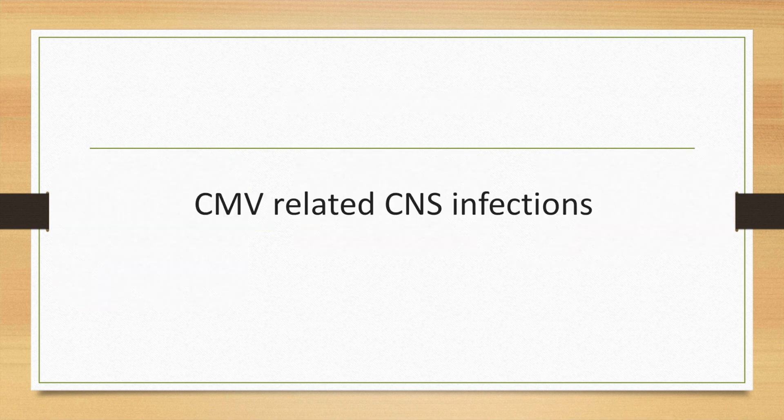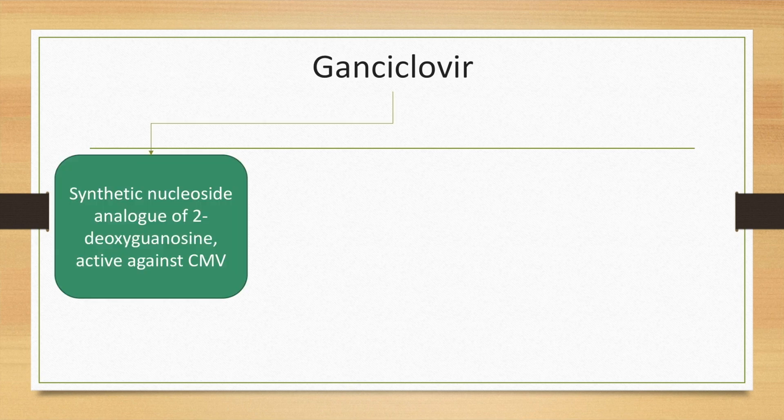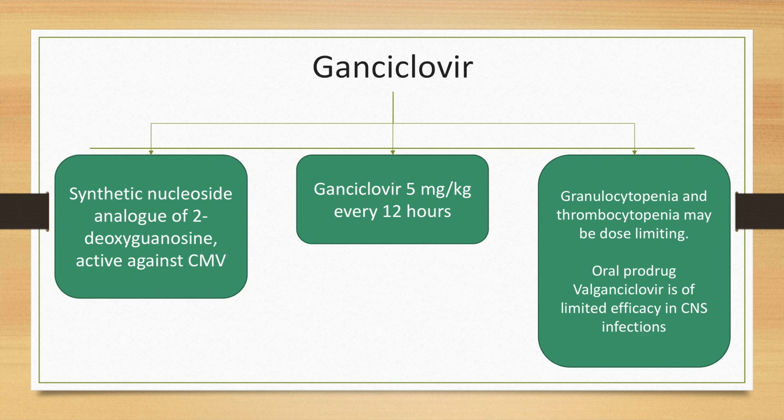For CMV-related CNS infections, the treatment of choice is ganciclovir, a nucleoside analog of 2-deoxyguanosine active against cytomegalovirus. It is given at a dose of 5 mg per kg every 12 hours. Granulocytopenia and thrombocytopenia may be dose-limiting. Oral prodrug valganciclovir is of limited efficacy in central nervous system infections.